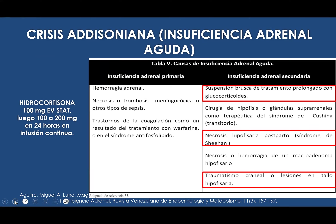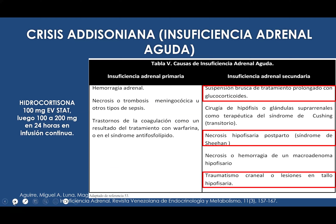Tenemos un concepto denominado crisis addisoniana o insuficiencia adrenal aguda, donde el paciente presenta un estado severo de estrés producido en algunos casos por infecciones o traumatismos. En estas situaciones vamos a necesitar incrementar la dosis de hidrocortisona — ya no 15 a 25 miligramos sino hasta 100 miligramos o hasta 200-400 miligramos en 24 horas en infusión continua. Todo factor externo que genere estrés en un paciente que ya tiene insuficiencia suprarrenal requiere elevar la dosis de corticoides para suplir esa necesidad de estrés y respuesta hormonal del organismo.